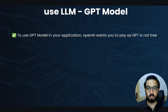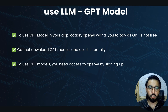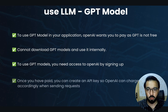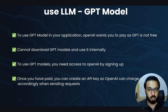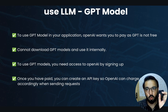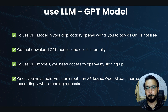To use GPT in your application, since it's not free, you cannot download GPT models. You need to sign up on OpenAI, add your payment method, set your monthly spending limits, and create an API key. OpenAI charges you based on your API key usage — every time you send requests using the GPT model, you're charged based on the total input plus output tokens used.